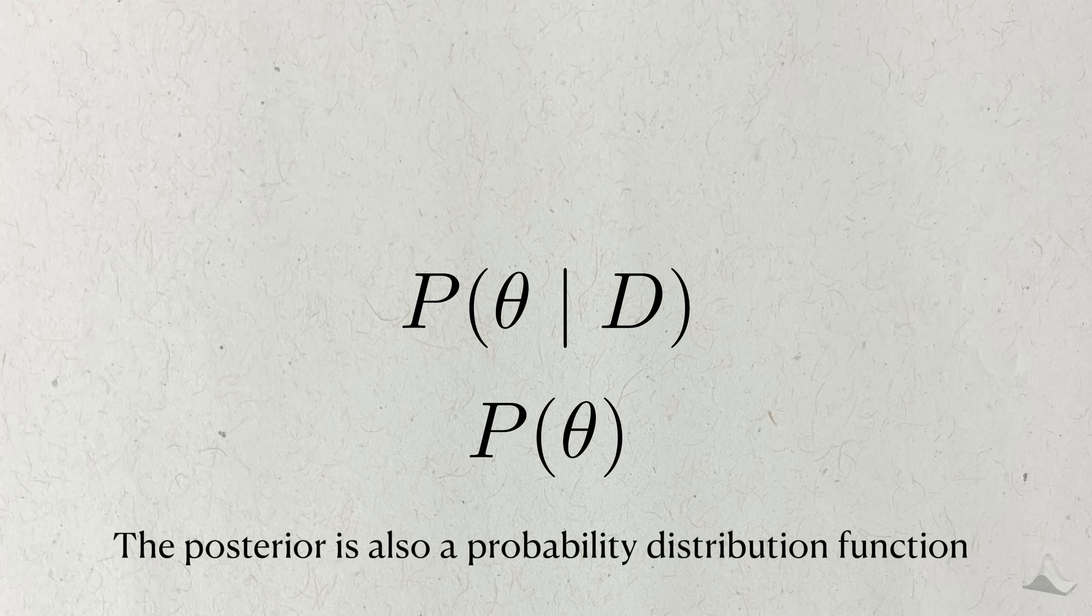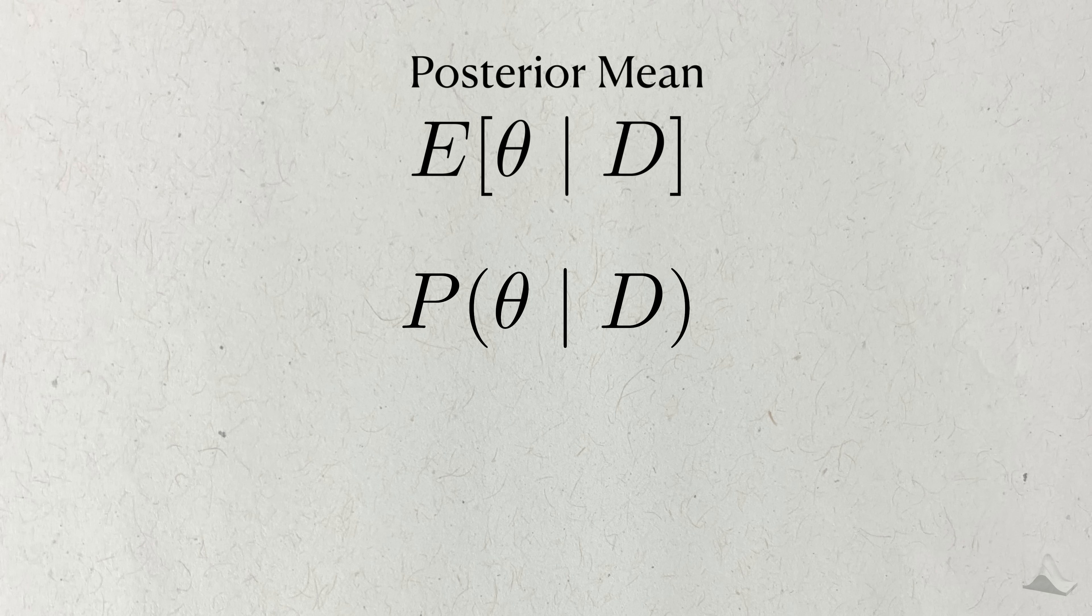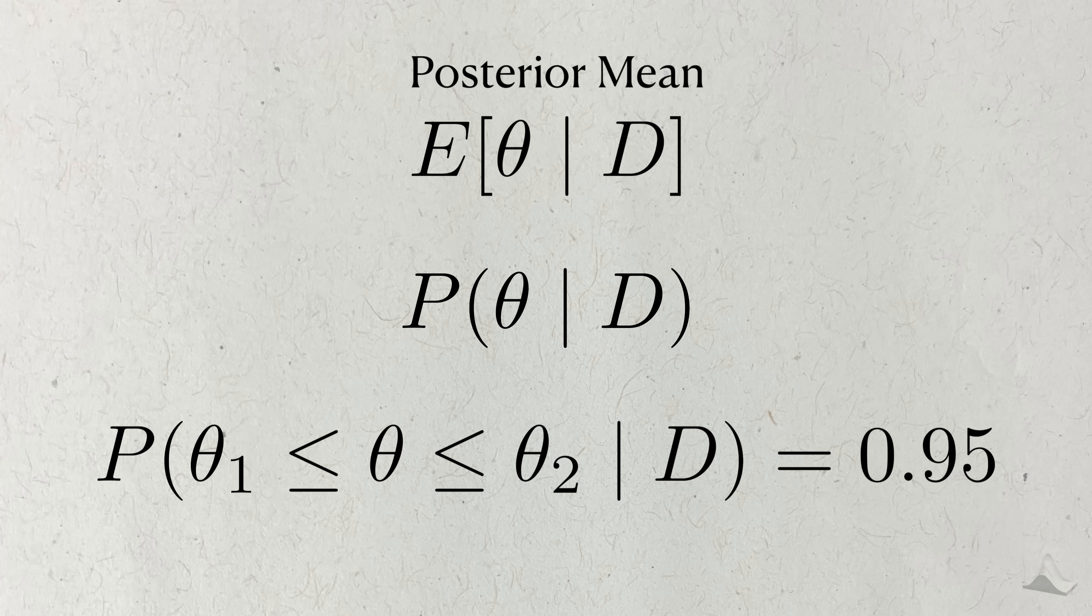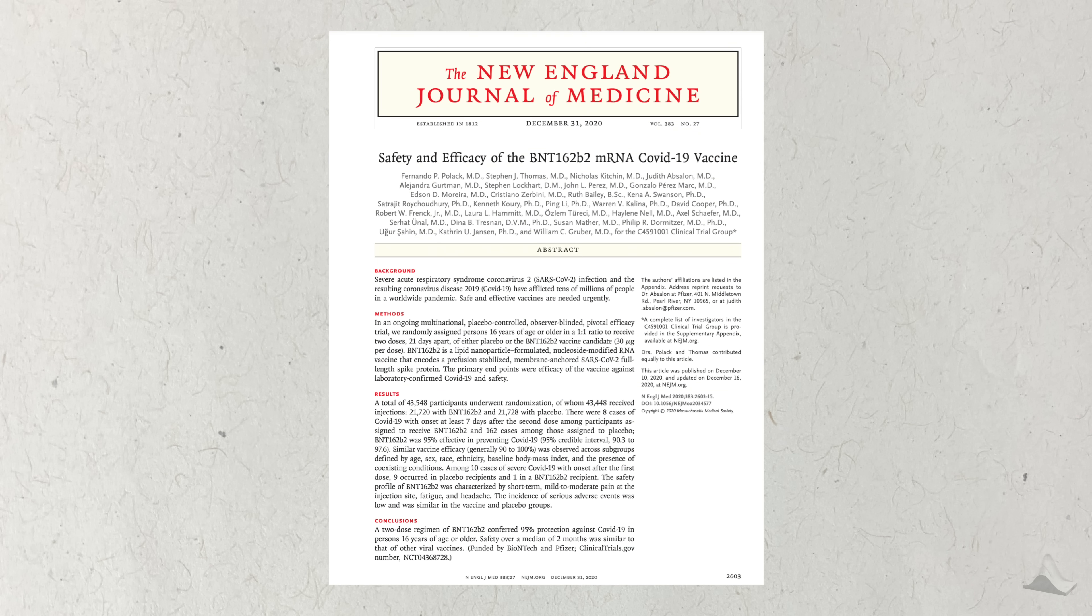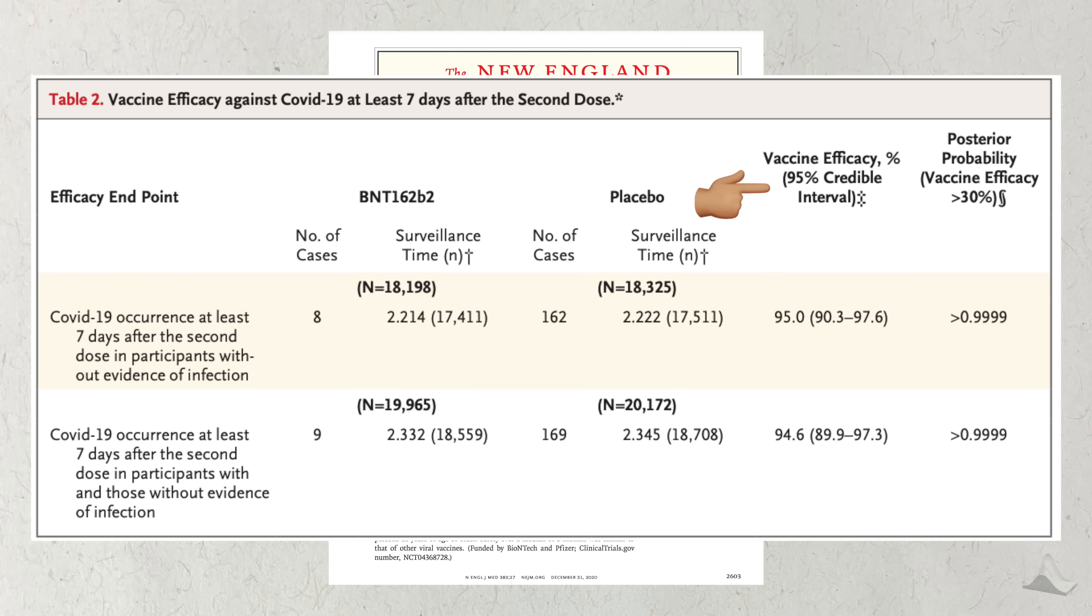Like the prior, the posterior distribution is also a PDF. You can figure out the mean of this posterior distribution, and you can calculate a range of values that contain a particular amount of probability, like 95%. In Bayesian parlance, this is the credible interval, and it's what confidence intervals wish they could be. Looking back at the Pfizer paper, you can see that they report a 95% credible interval.